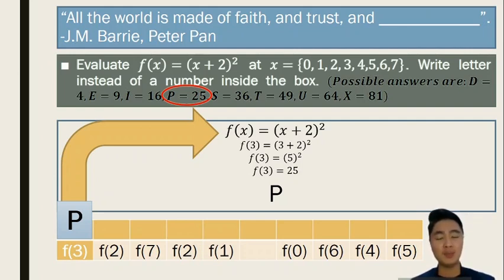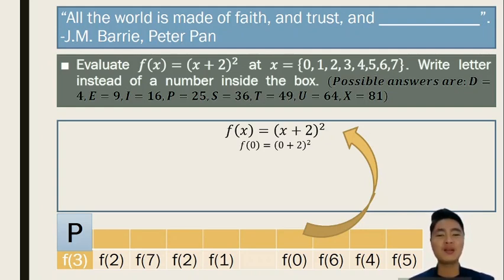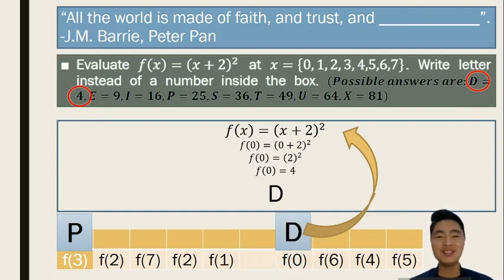Let's try another letter. How about if we try the first letter of the second word? F of x equals the quantity x plus 2 squared. Now, for this case, we have to use 0 as our value for x. Replacing all the x's we have, f of 0 equals the quantity 0 plus 2 squared. Simplifying that would give us 2 squared which is 4. Alright, among the possible answers, we can see that that is letter D. And we can put that on our table. Now, we still have some missing letters here. And that is for you to solve. Make sure you complete the quotation.